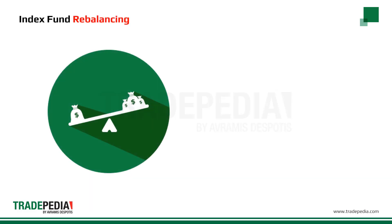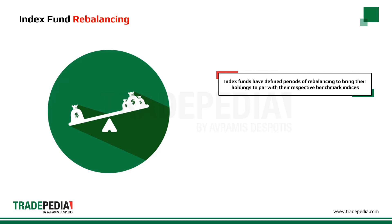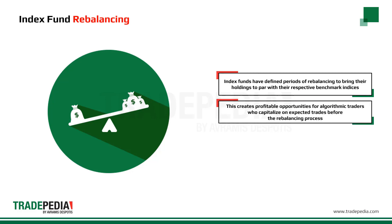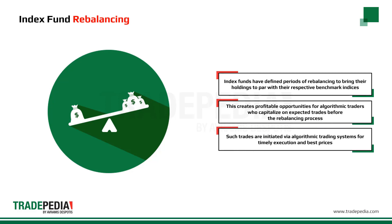Index funds have defined periods of rebalancing to bring their holdings to par with their respective benchmark indices. This creates profitable opportunities for algorithmic traders who capitalize on expected trades that offer 20 to 80 basis points of profits depending on the number of stocks in the index fund. Just before the rebalancing process, such trades are initiated via algorithmic trading systems for timely execution and best prices.